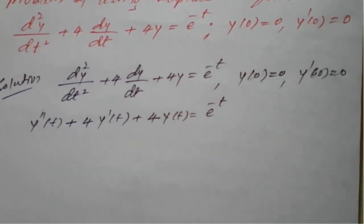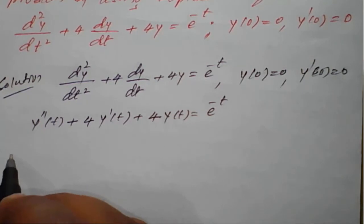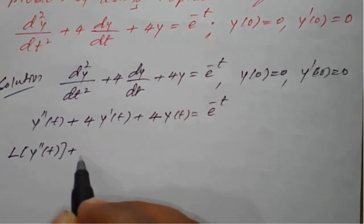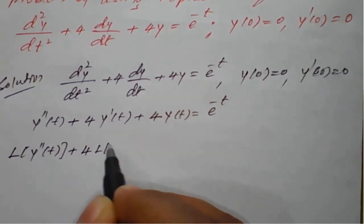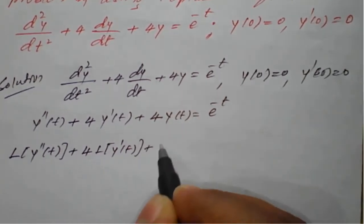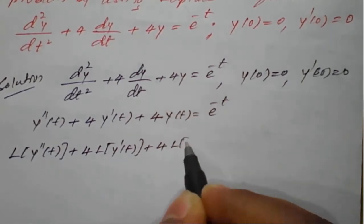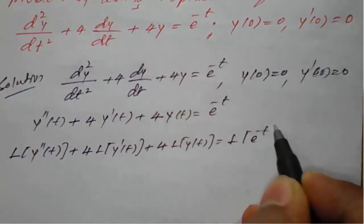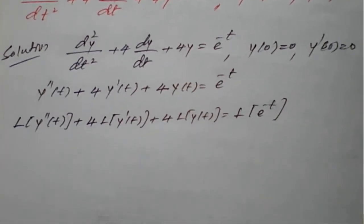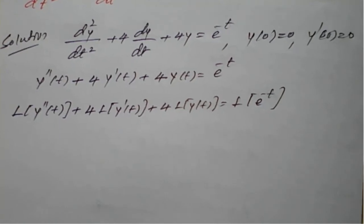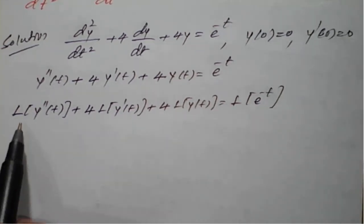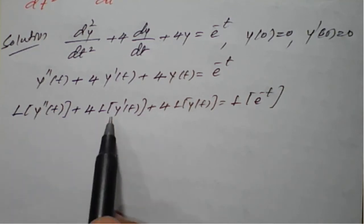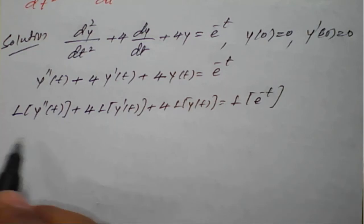We take Laplace transform on both sides. So L{y''(t)} plus 4·L{y'(t)} plus 4·L{y(t)} equals L{e^(−t)}. We need to apply the standard expressions for L{y''(t)} and L{y'(t)}.